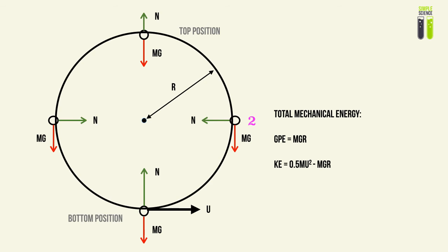At the middle position, there is gravitational potential energy relative to the bottom, where h = r, so GPE = mgr. The kinetic energy there is ½mu² − mgr. At the top position, the height is 2r, so GPE = 2mgr, and the kinetic energy is ½mu² − 2mgr.